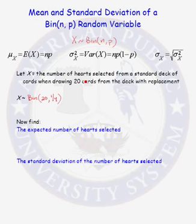Now, let's find the expected number of hearts that we will select when we draw 20 cards with replacement from the deck. The expected value or the mean of our random variable is just equal to n times p, which is 20 times one-fourth, which is 5. So if we select 20 cards with replacement from a standard deck of cards, we would expect to see on average, the long run average, we would expect to see 5 of those cards to be hearts.